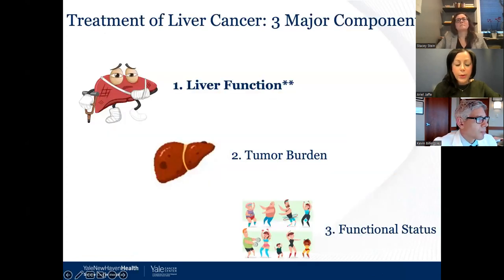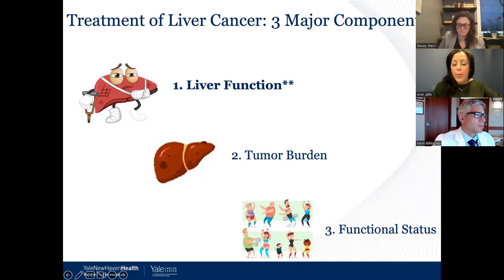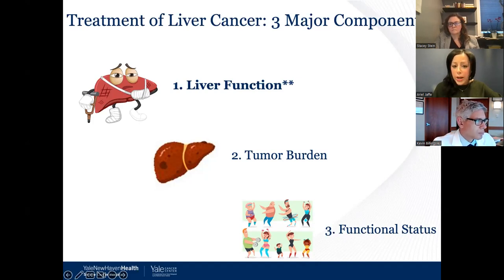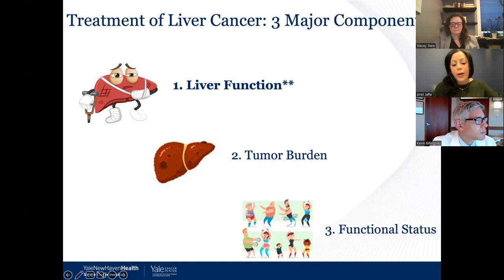When discussing patients with liver cancer, although three factors help with staging, by far the most important factor — affecting both what treatments patients can tolerate and overall prognosis — is underlying liver function. Scoring systems and objective markers we use include the Child-Turcotte-Pugh class, which combines objective lab data with subjective factors like encephalopathy or ascites, as well as the MELD score, which is purely objective based on labs. There are also newer markers including the ALBI score that may be more inclusive in giving patients the benefit of being treated.